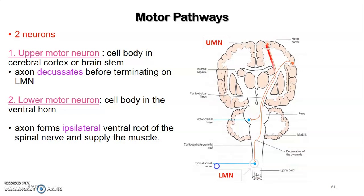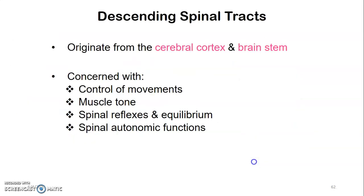Looking at the diagram, the upper motor neuron cell body is on the cerebral cortex or brain stem. It decussates — you can see the decussation before terminating on the lower motor neuron. Decussation occurs at the pyramids of the medulla. The lower motor neuron cell body is in the ventral horn of the spinal cord and will terminate onto a muscle. Descending spinal tracts originate from the cerebral cortex or brain stem and control movement, muscle tone, spinal reflexes, equilibrium, and spinal autonomic function. Those are the four major roles.